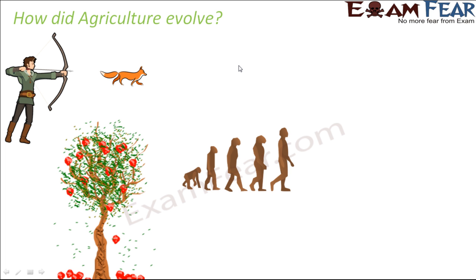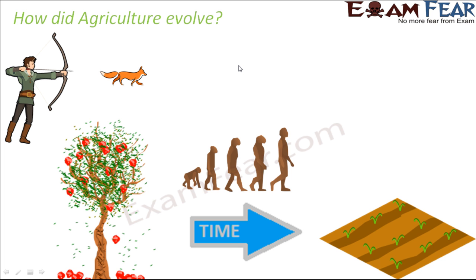Another way was eating raw fruits. These were some of the ways through which they obtained food for themselves and that's how they survived. But with time, they learned to cultivate land and produce crops, and that is what we do today. So over a period of time, they gradually learned better things and better ways of growing crops.